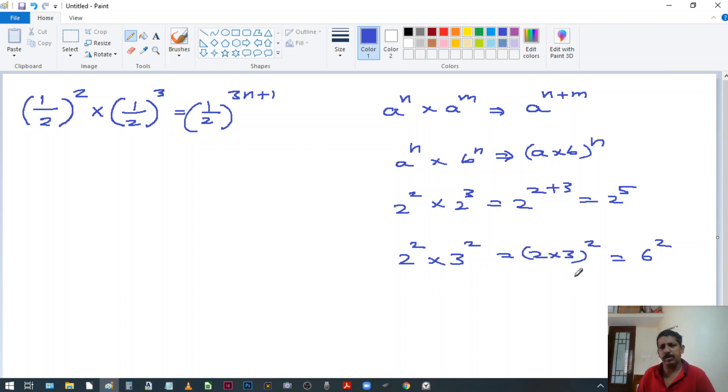So the 6 raised to 2 answer is what? 36. And this also, if you do it separately, what happens? 4 into 9, what is the answer? 36. See? So it works out.